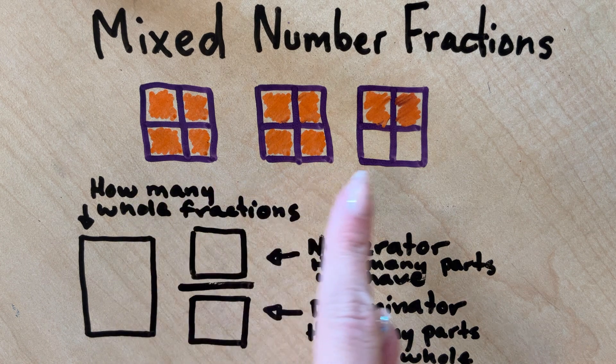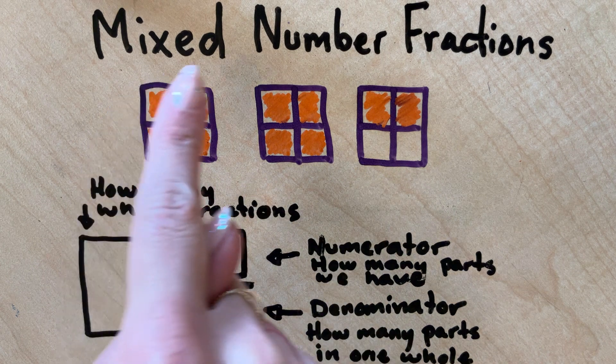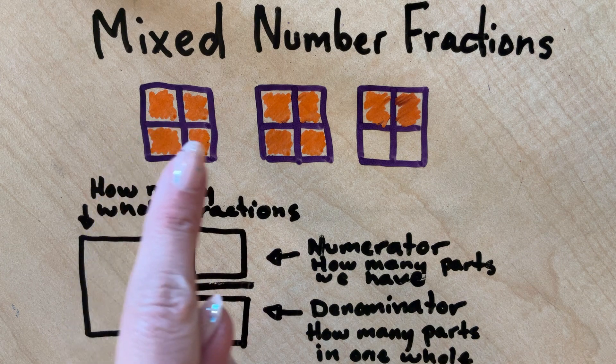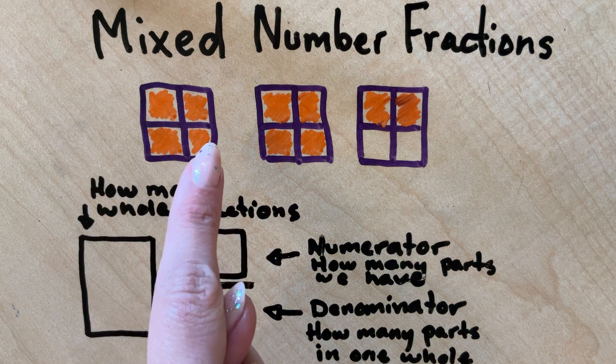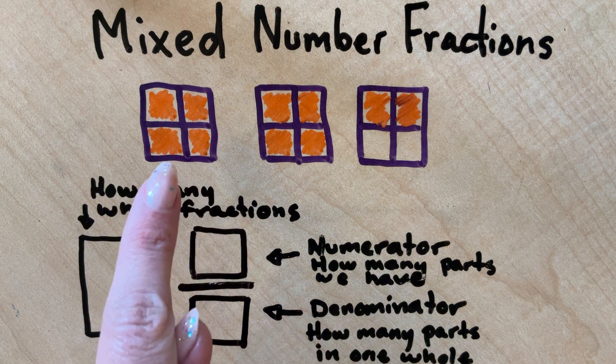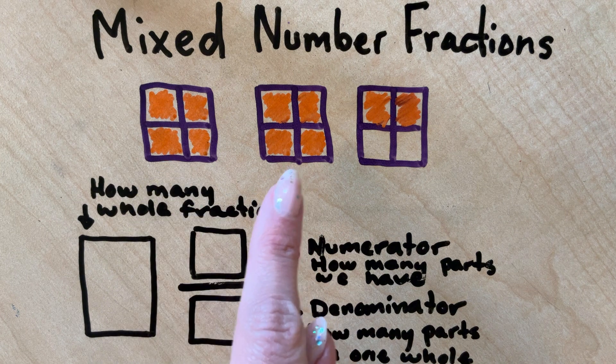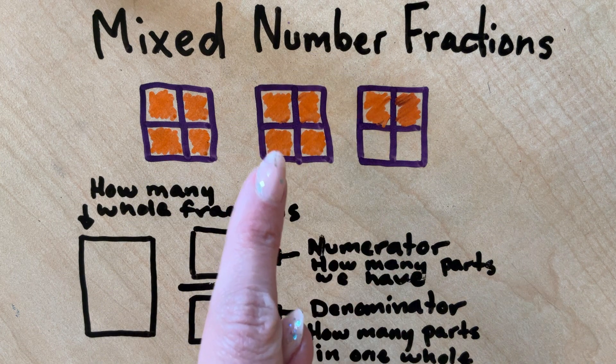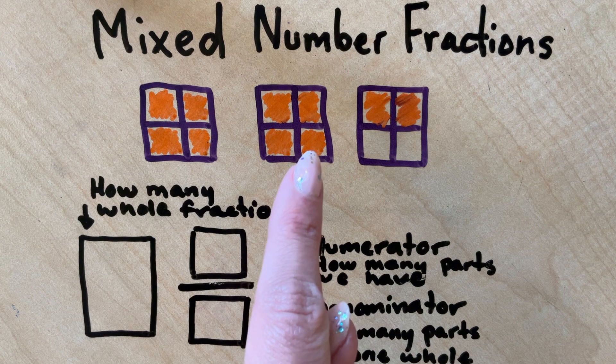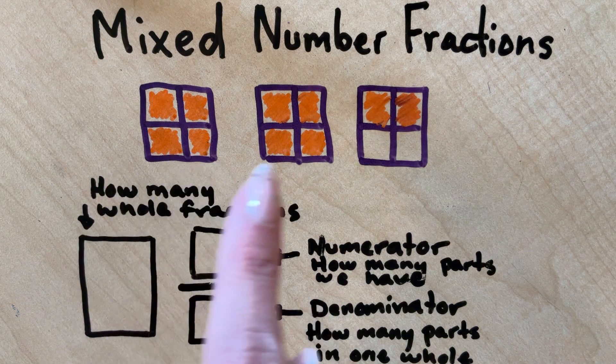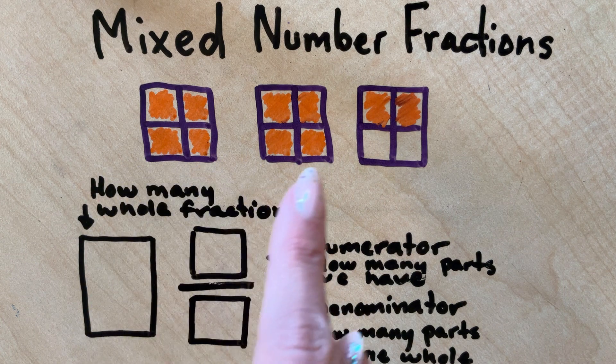So when we look at this fraction above, I can tell that this is one whole fraction because out of my four pieces, all four are colored in. This is one whole of four fourths. Here, I have a second whole of four fourths since all four pieces are colored in. I have two whole fractions of four fourths.